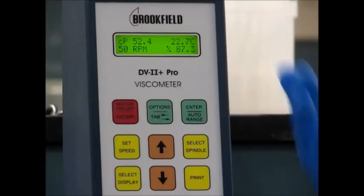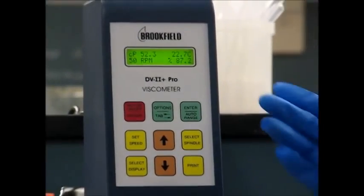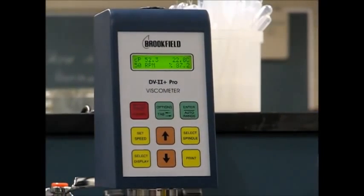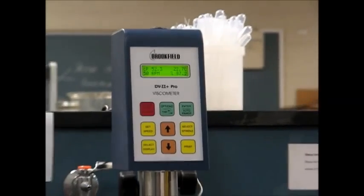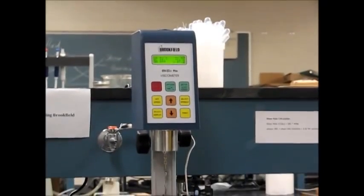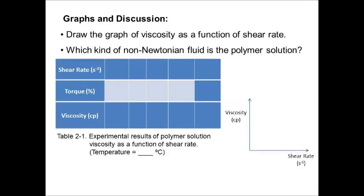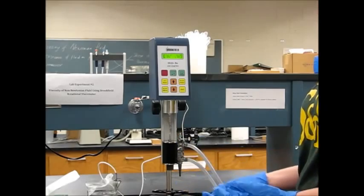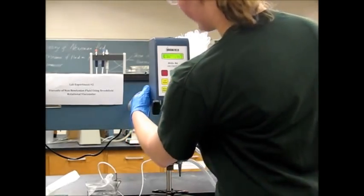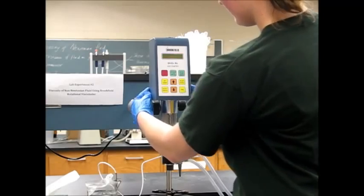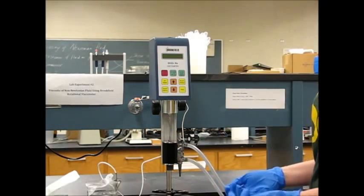Before recording each of your measurements, be sure that the reading on the viscometer has stabilized to ensure accuracy. Also, when you're plotting your shear stress versus viscosity, we need to get these points and find this relationship to determine what kind of fluid we actually have here. When we're finished taking our readings, then we're going to turn off the viscometer, undo everything, and then clean it thoroughly.